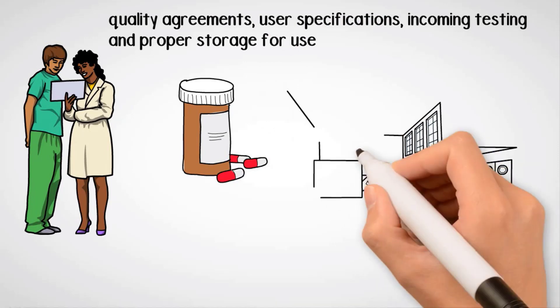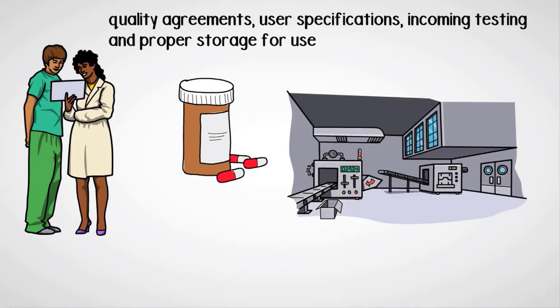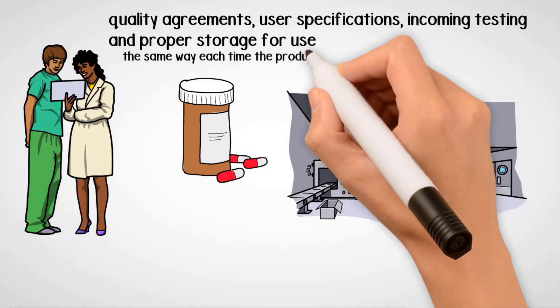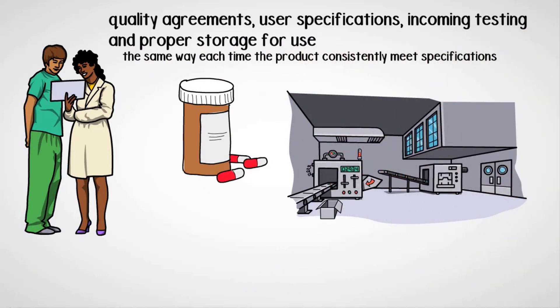Principle 3. Validation is performed to ensure that when processes are followed the same way each time, the product consistently meets specifications.